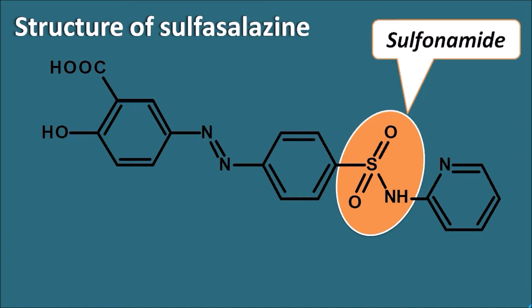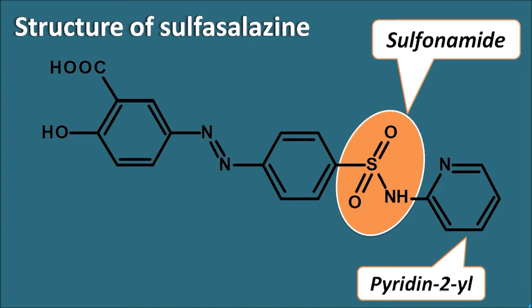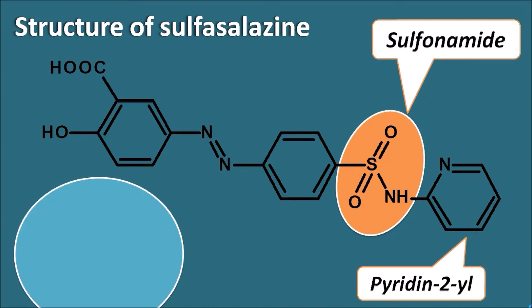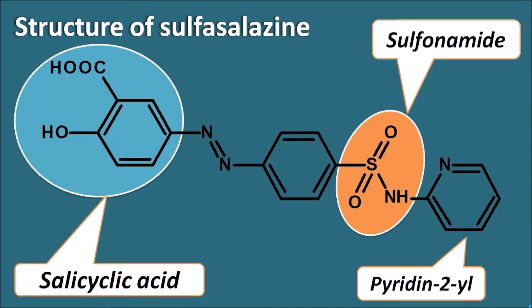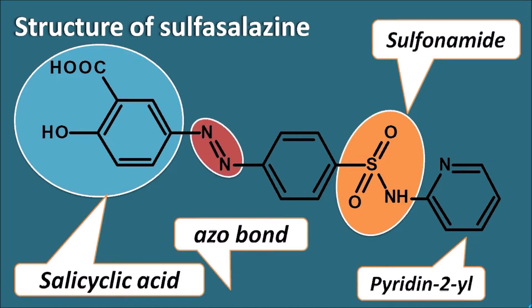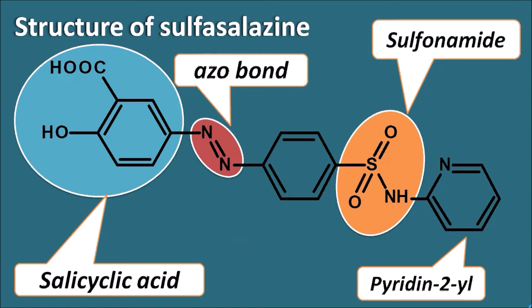This sulfonamide moiety is attached to a heterocyclic ring system - that is the pyridine, attached at the second position, so the name of this side chain is pyridine-2-yl. Another aspect of the structure of sulfasalazine is the salicylic acid, present on the other side of sulfasalazine. The salicylic acid and the sulfonamide are attached by a linkage made up of two nitrogens - the azo bond - which is very important for the action of this drug.